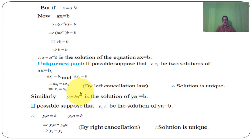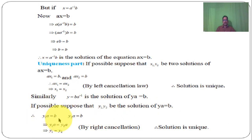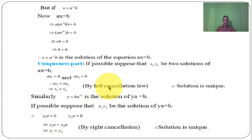To show uniqueness: if possible, suppose that Y1 and Y2 are two solutions of YA equal to B. Then Y1A equal to B and Y2A equal to B. Therefore Y1A equal to Y2A. By right cancellation law, Y1 equal to Y2. Therefore the solution is unique. Thus the necessary condition is proved.